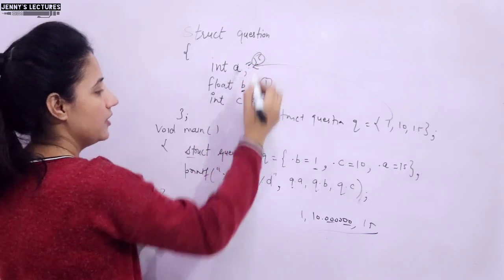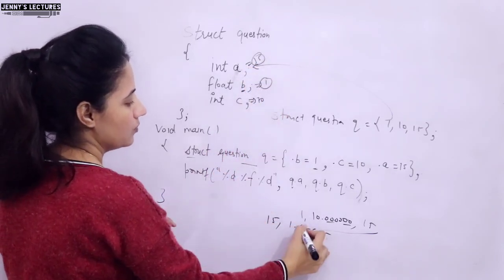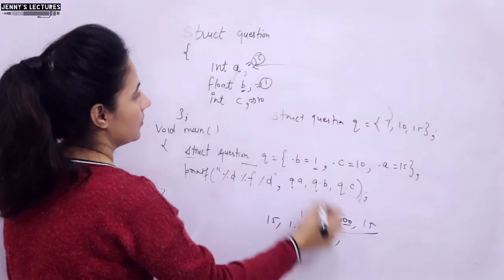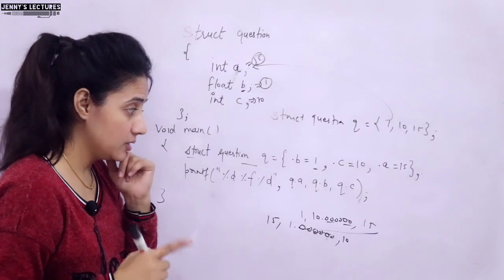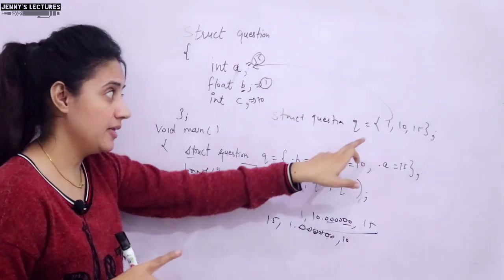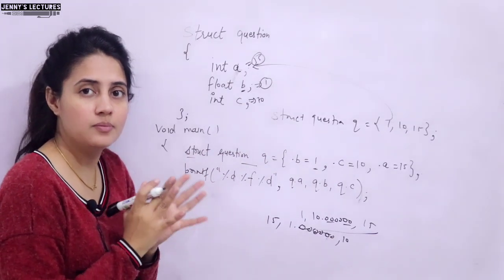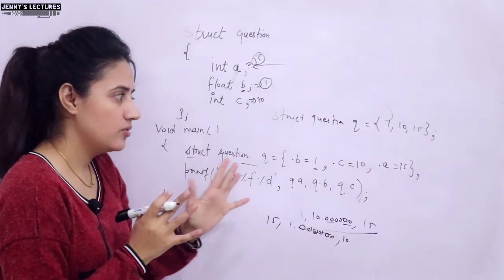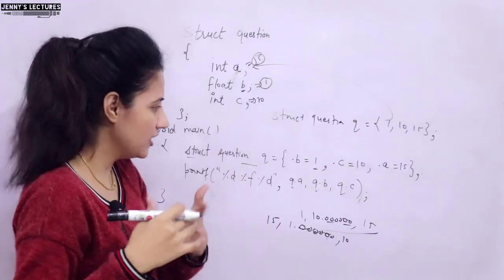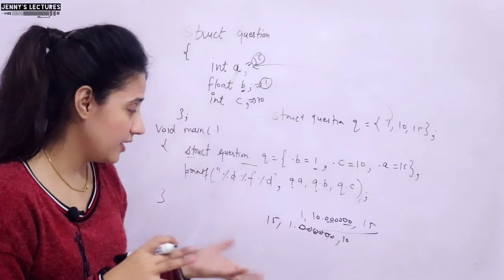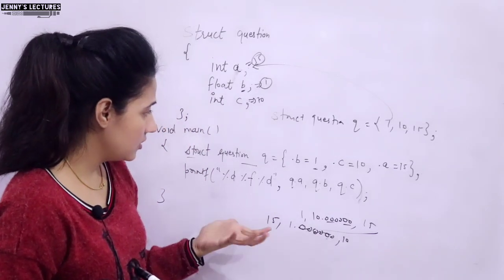So in this case, if you will print Q dot A, Q dot B, Q dot C, then what output you will get? In A, we have 15, in B, we have 1, 1.000 like 6 zeros and in C, we have 10. Right. So I hope you can see the difference. Simple initialization and this is what designated initialization of the members of the structure. You can run this and you can see you are getting the same output or not.